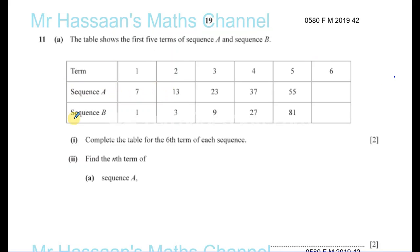We have two sequences, A and B. First of all we've got to complete the table for the sixth term of each sequence. So we've got to look for a pattern. One of the ways to look for a pattern is to see if you can add a certain number each time to get to the next number. A very useful thing to do is to look at the differences between each term.